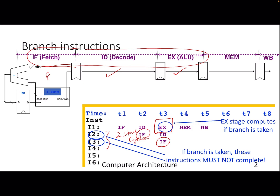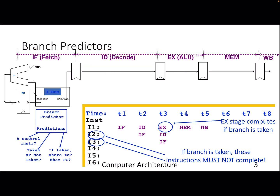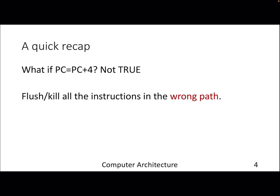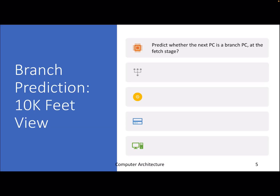In the context of control hazards, how can a branch predictor help? Let's treat it as a black box — as the name suggests, it predicts the branch. It predicts whether the branch will be taken or not taken, and if taken, what the target address is. First, you must know whether it is a branch instruction; then the predictor decides taken or not taken. A quick recap: in the last lecture we were predicting PC+4, which is a trivial branch predictor, and killing all wrong-path instructions.